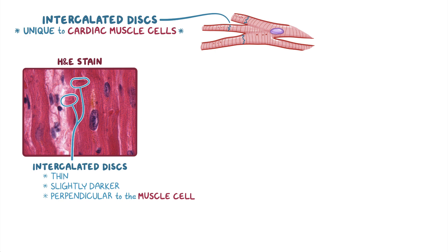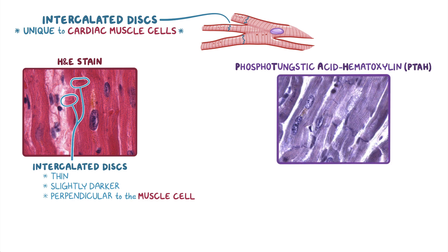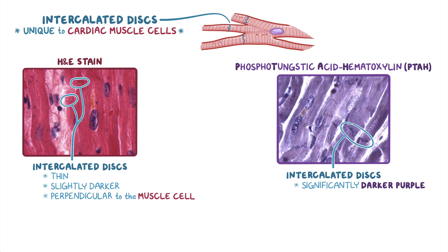In order to see the intercalated discs better, a section of tissue can be stained with a specialized stain such as phosphotungstic acid hematoxylin, or PTAH for short. Although both the cytoplasm and intercalated discs will stain purple, the intercalated discs will be a significantly darker purple in comparison to the surrounding cytoplasm.